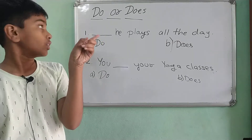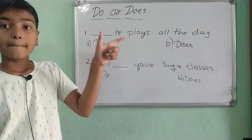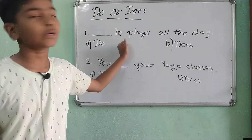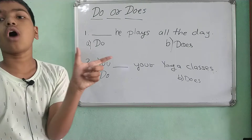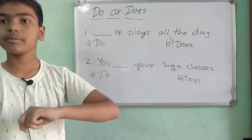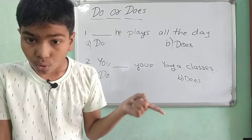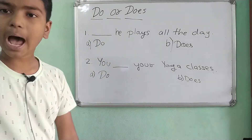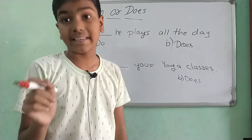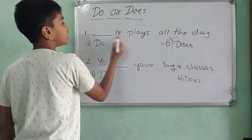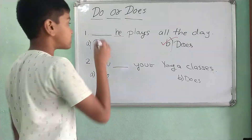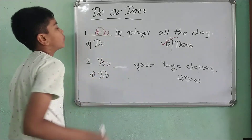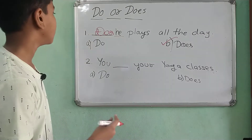First question: blank — he plays. It's a question, so will it be 'do' or 'does'? If you guessed 'do,' you are absolutely wrong, because it should be 'does.' See — the subject here is 'he,' which is singular and comes in third person. So we use 'does.' Does he play? That is correct.